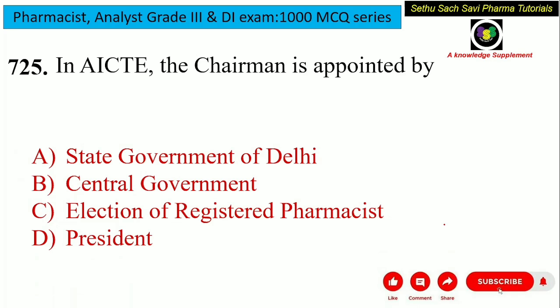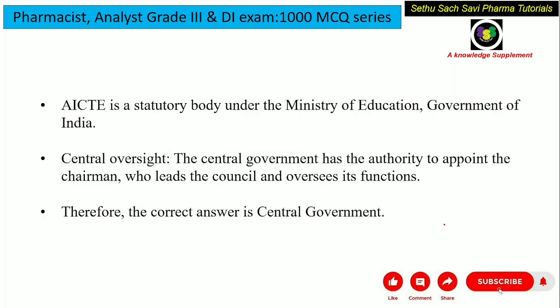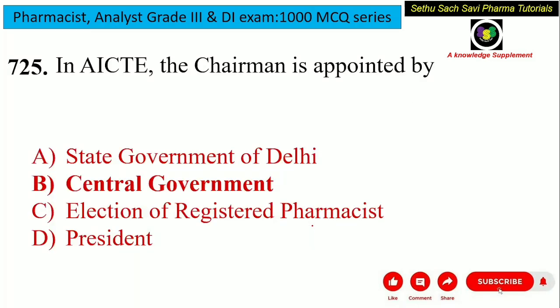In AICTE, the chairman is appointed by — is it the state government of Delhi, the central government, the collection of registered pharmacists, or the president? AICTE is a statutory body under the Ministry of Education in the Government of India. So the central oversight is the main authority which appoints the chairman. The answer for this question is option B, central government.